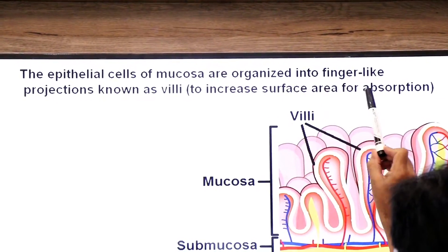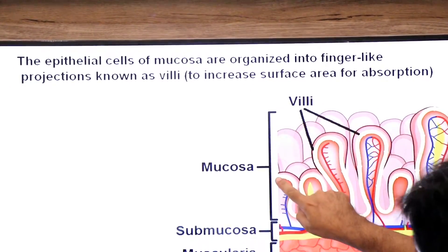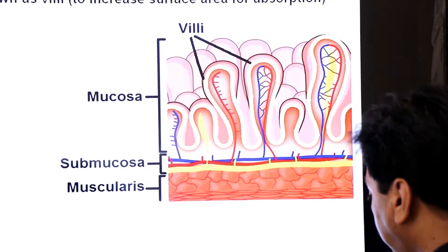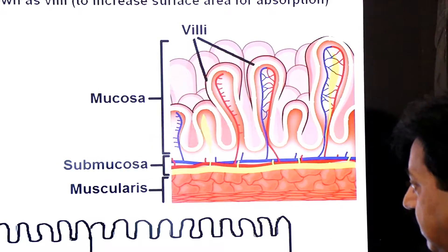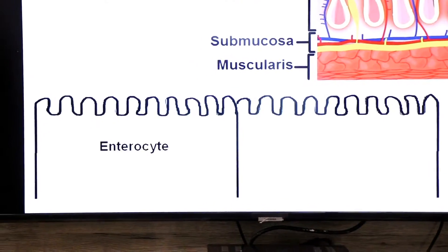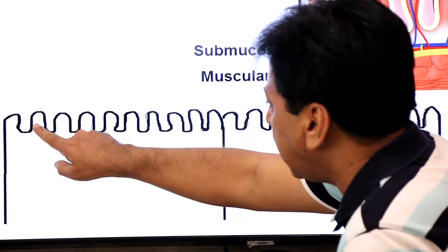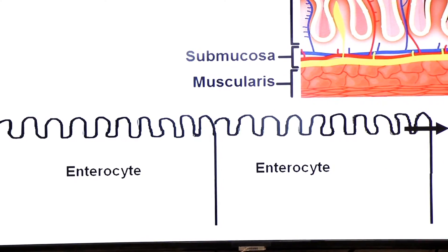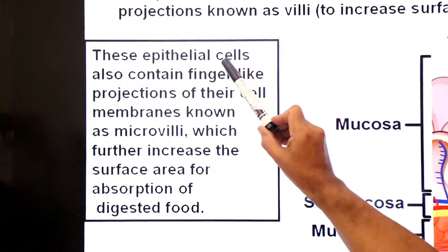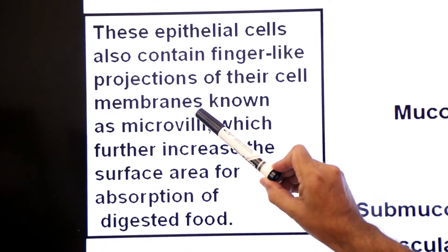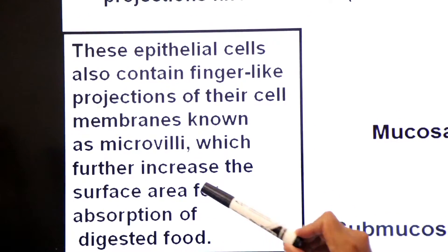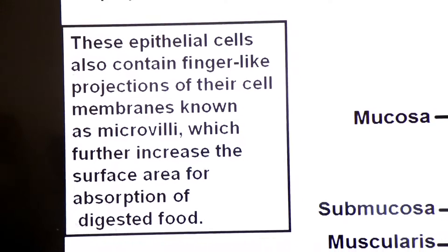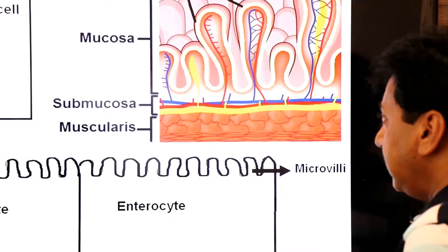To increase the surface area for absorption of digested food, the epithelial cells of the mucosa — called enterocytes — further produce microvilli. These are folds of the plasma membrane of enterocytes, also called the brush border. These microvilli further increase the surface area for absorption. Here you can see the villi, which are finger-like projections produced by the mucosa layer, and the cells forming them are known as enterocytes.